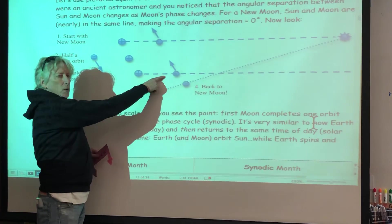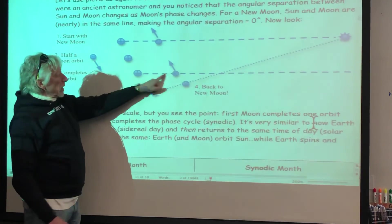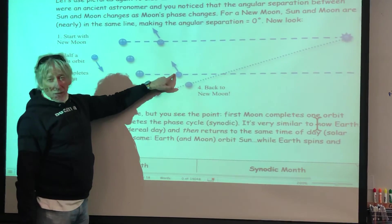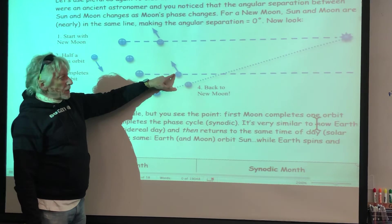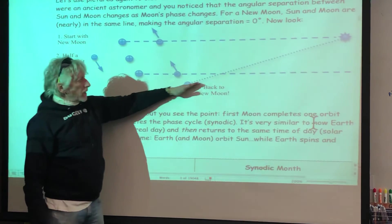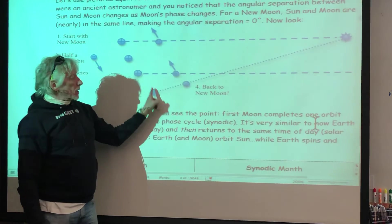But now, because we've orbited, we've gone around once in about 27 and a half days. But it's not new yet until it's lined up with Sun another couple of days.